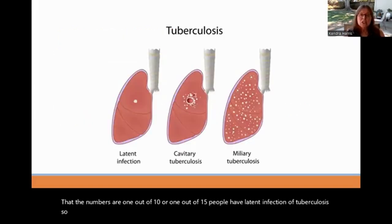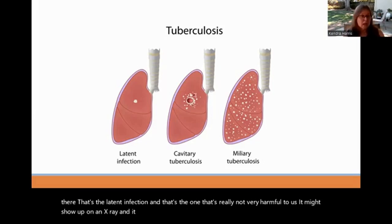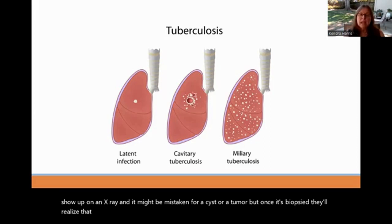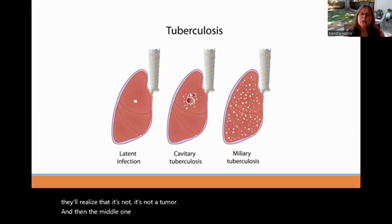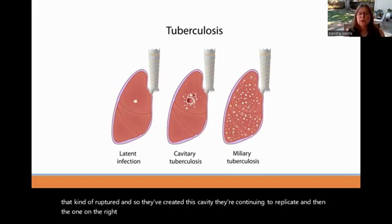This graphic shows the different types of tuberculosis. On the left is the latent infection, which is not very harmful — it might show up on an x-ray and be mistaken for a cyst or tumor, but biopsy would reveal it's not. The middle one is cavitary tuberculosis, where the tubercle ruptures and the bacteria continue replicating in a cavity. On the right is miliary tuberculosis, where it has spread throughout the lung.